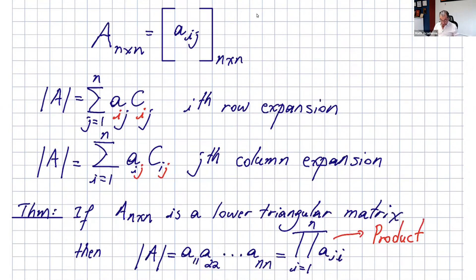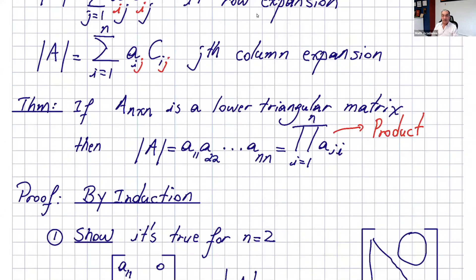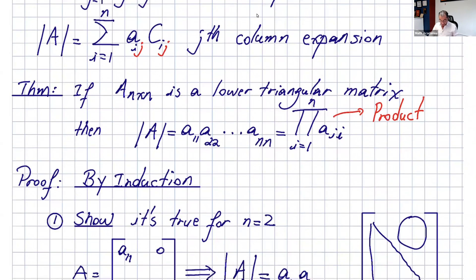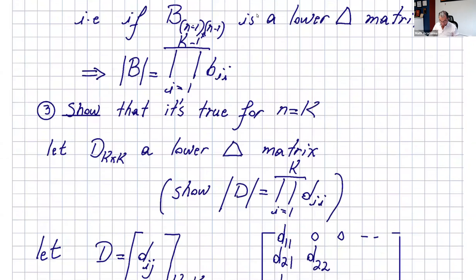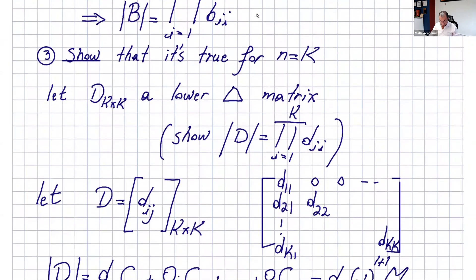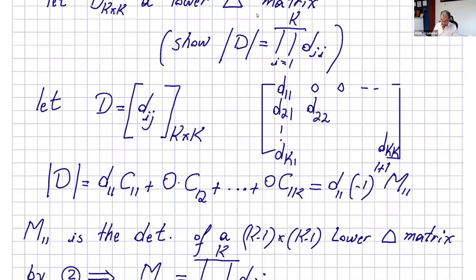Then we talked about triangular, diagonal, lower triangular, and upper triangular matrices. We said the determinant of all three of these matrix types is just the product of the entries in the diagonal. I also went over the proof of that using induction. Please watch the last video.